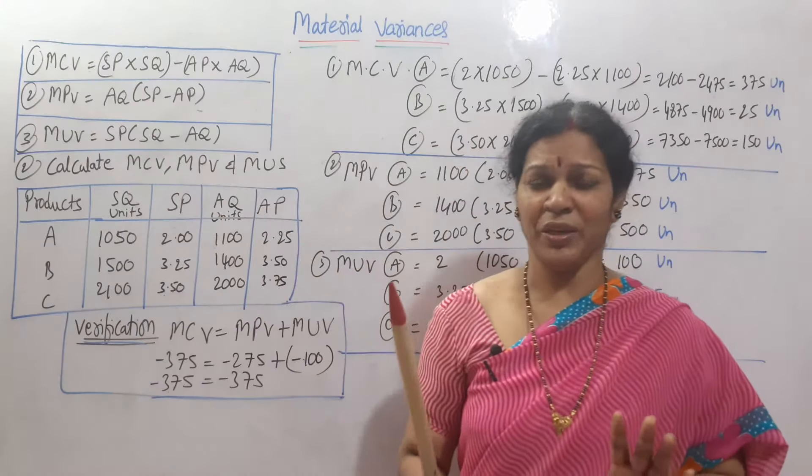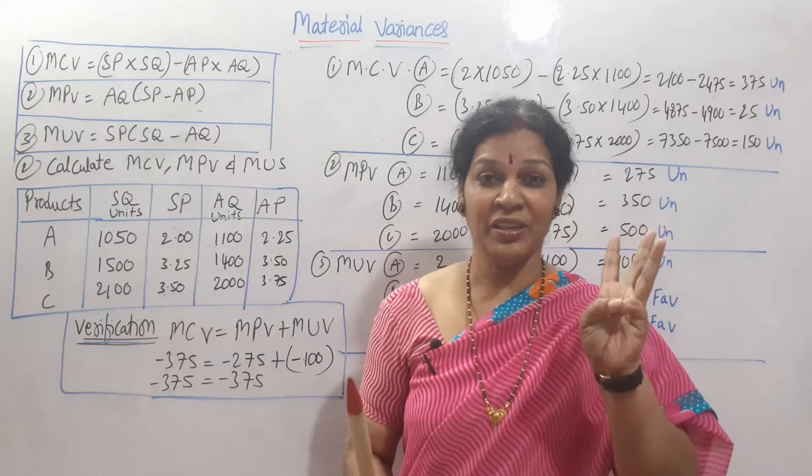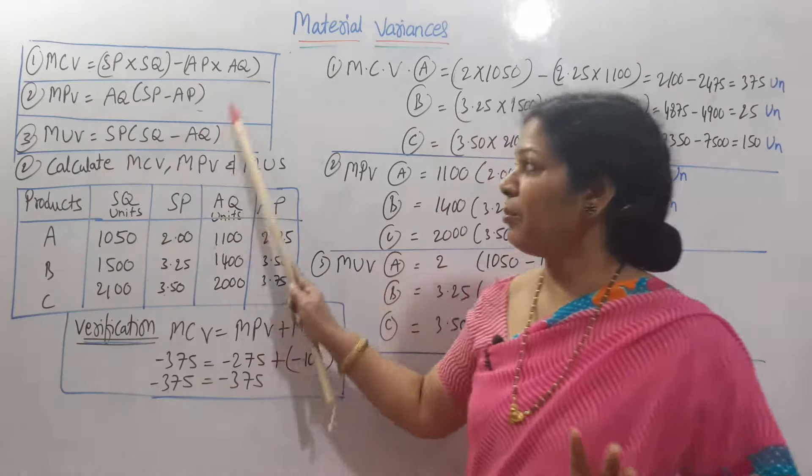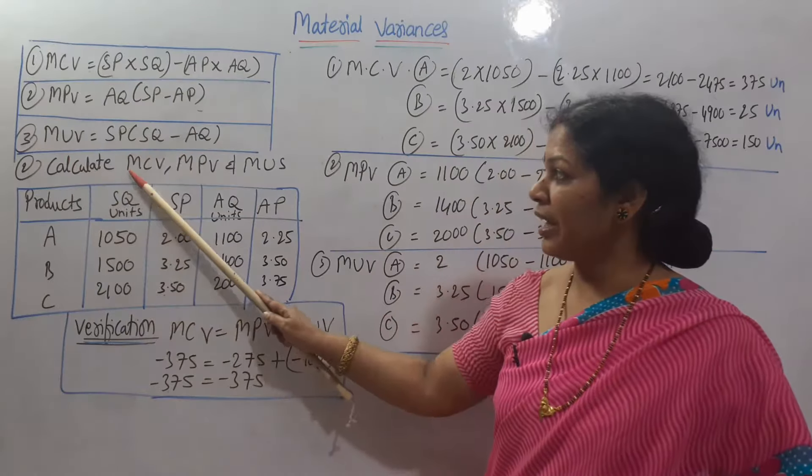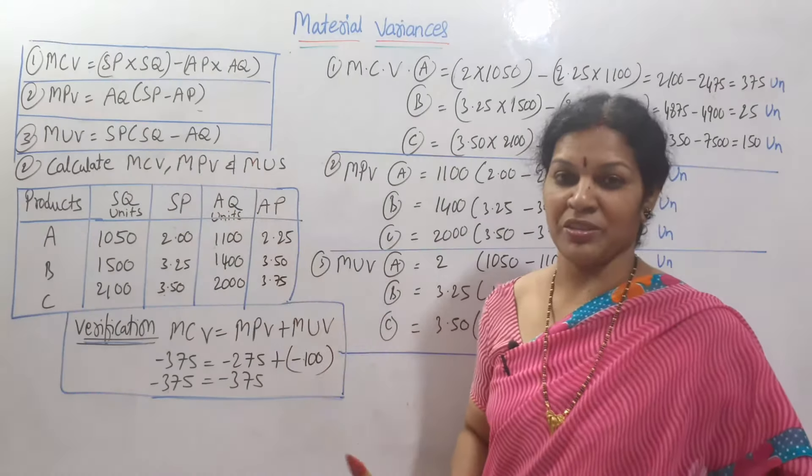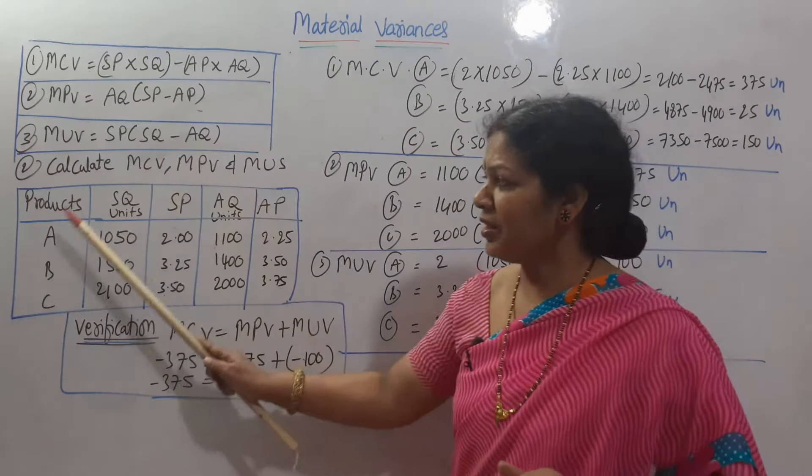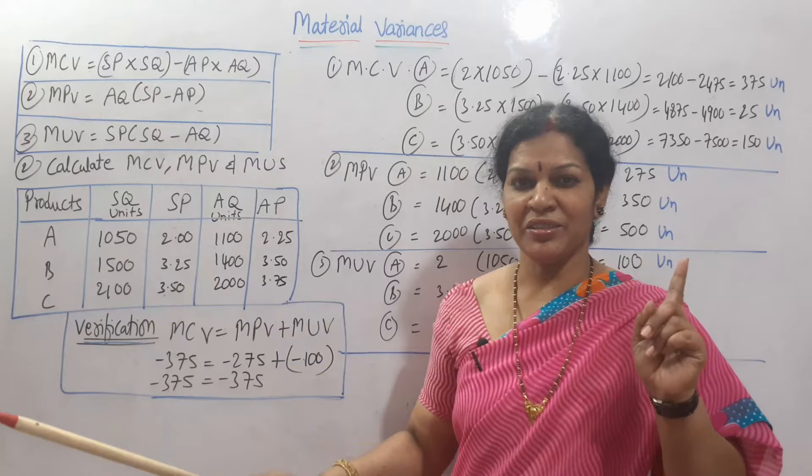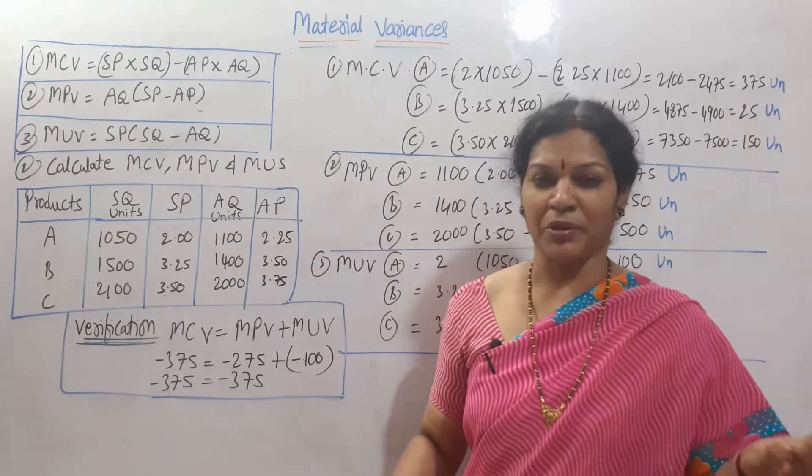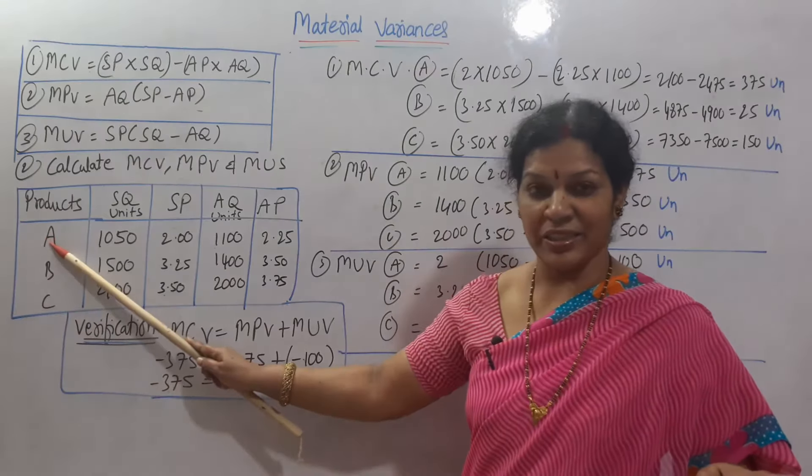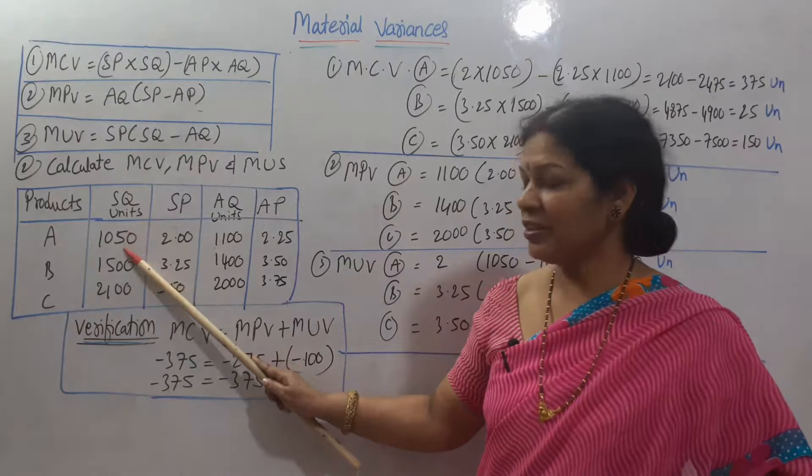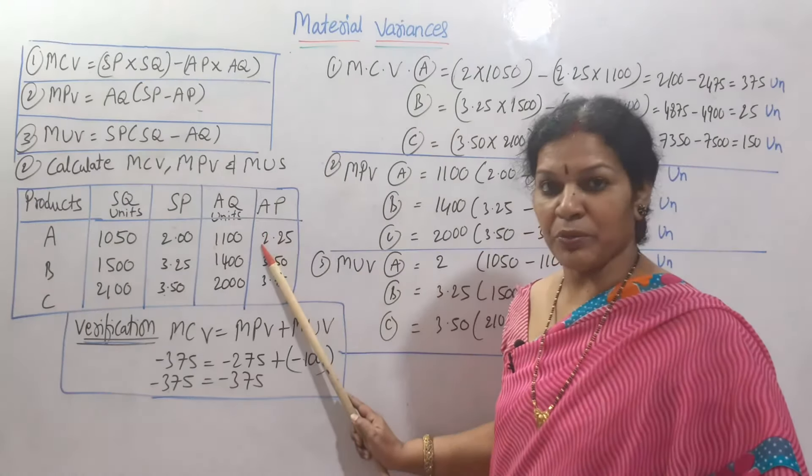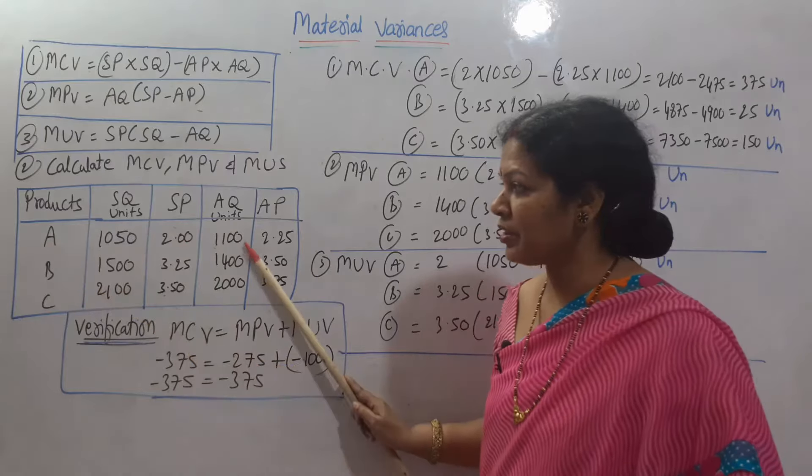Today's problem is also like this only. We are going to work out material cost variance, material price variance, material usage variance. Three related to this. The problem is given to us. Calculate material cost variance, material price variance, material usage variance. Everything is given in a table. Three different products are there: product A, product B, product C. For product A, standard quantity is 1050, standard price is 2 rupees, actual quantity 1100, and actual price is 2.25 rupees.